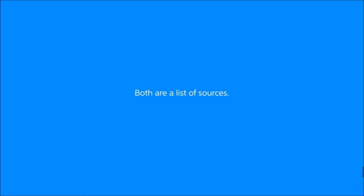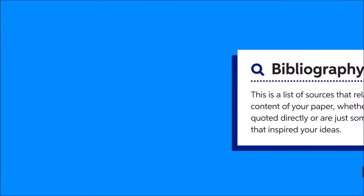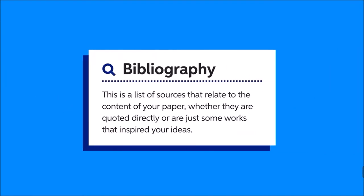You've probably heard the terms works cited and bibliography used interchangeably, but they're actually two different things. Both are a list of sources that had some influence on your paper. However, a bibliography is a list of sources that relate to the content of your paper, whether they are quoted directly or are just some works that inspired your ideas. You can use bibliographies to suggest additional reading to your audience if you're interested in learning more about the subject you discuss in your paper.